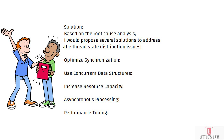These solutions are specific to the thread state distribution scenario and may not apply to other issues discussed in the next video. The fifth and final solution is performance tuning: you would perform activities such as optimizing database queries, reducing network latency, and fine-tuning JVM parameters to alleviate performance bottlenecks and improve overall system efficiency.